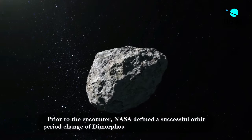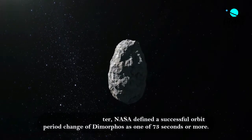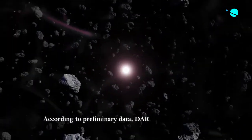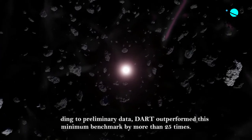Prior to the encounter, NASA defined a successful orbit period change of Dimorphos as one of 73 seconds or more. According to preliminary data, DART outperformed this minimum benchmark by more than 25 times.